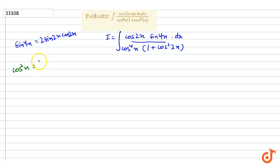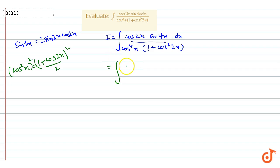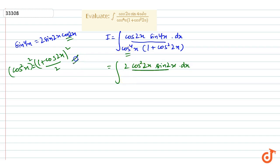Cos square x we can write as 1 plus cos 2x by 2. So cos power 4 we can find the term using this. If we replace them, we have to find the integration of 2 into cos square 2x. This cos 2 is here and 1 is here before. So we find the term sin 2x into sin 2x dx divided by cos 4x. So 1 plus cos 2x divided by 2, whole square, into 1 plus cos square 2x.